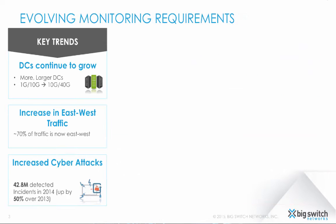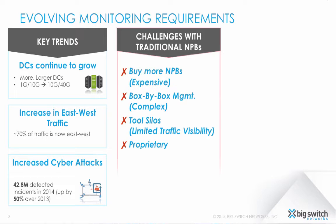Furthermore, looking at the current data center trends, the problems get worse. As data centers continue to grow in size, number, and bandwidth, as malware-based security attacks increase, and as east-west traffic increases — now typically 70% or more in the data center — deeper monitoring has become even more important, which means you have to buy more expensive NPBs.